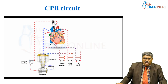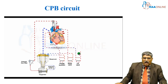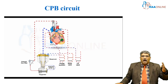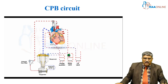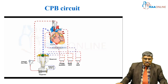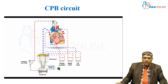For the LV vent, you go via the right superior pulmonary vein through the mitral valve into the left ventricle, and you take the blood from the left ventricle so the heart doesn't distend. This blood goes into the venous reservoir, gets oxygenated again, and goes into the arterial pump.